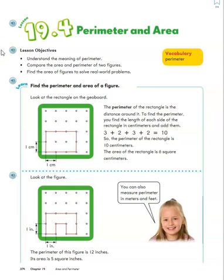Hopefully you remember that area has to do with the surface space on the top of a flat shape. So if we think about our kitchen table, when we find the area of our kitchen table, that means how much room do we have on the surface — how much space do we have to put all our plates, cups, forks, knives, and everything we need to eat dinner. We can measure area in square inches, square centimeters, square feet, or square meters — that's the amount of surface area on a shape.